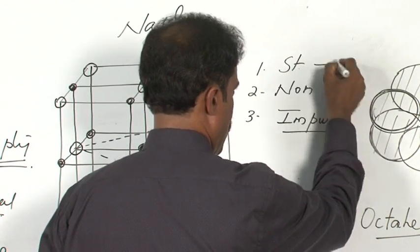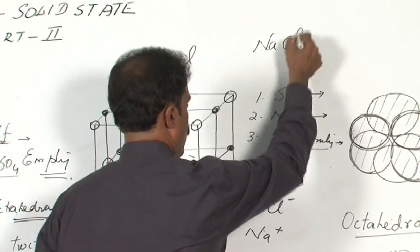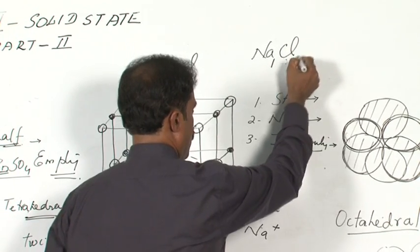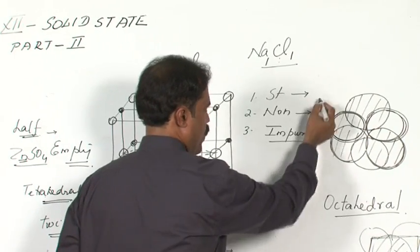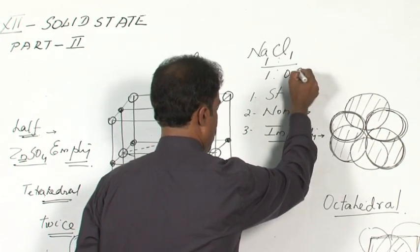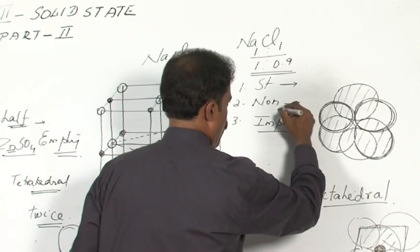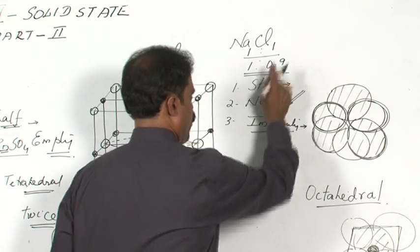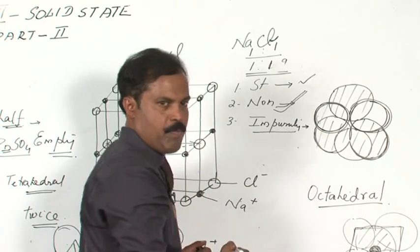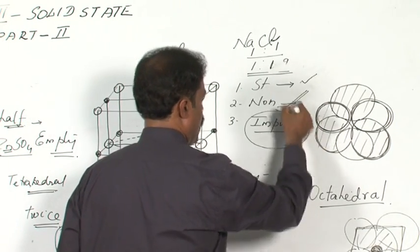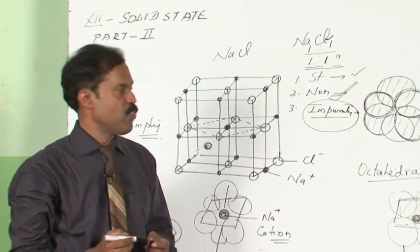A stoichiometric defect means the ratio between components remains the same (e.g., 1:1 for NaCl) but a defect still exists. A non-stoichiometric defect means the ratio changes due to the defect. An impurity defect occurs because of some outside impurity. The details of each type may be studied from the textbook.